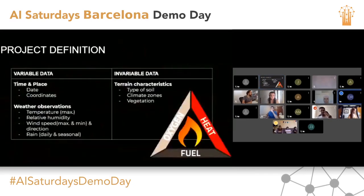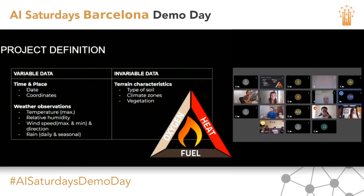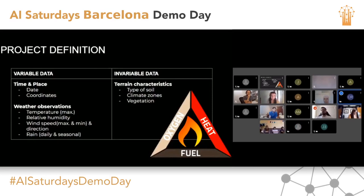Here you can see the variables we have, divided into invariable and variable groups. The invariable data includes terrain characteristics like soil type, climate zones, and vegetation. The variable data includes the time and place of the fire — date and coordinates — and weather observations including temperature, relative humidity, wind speed, and rainfall rates — not only daily but also seasonal and monthly means.